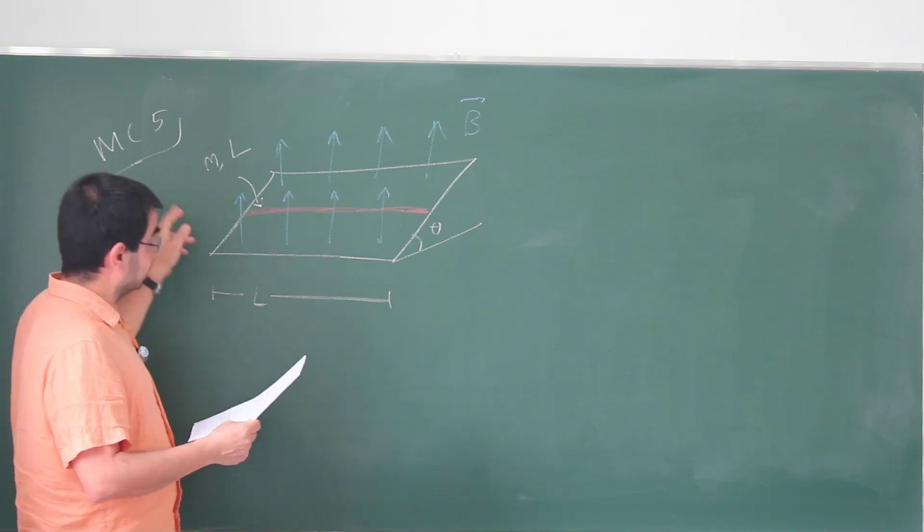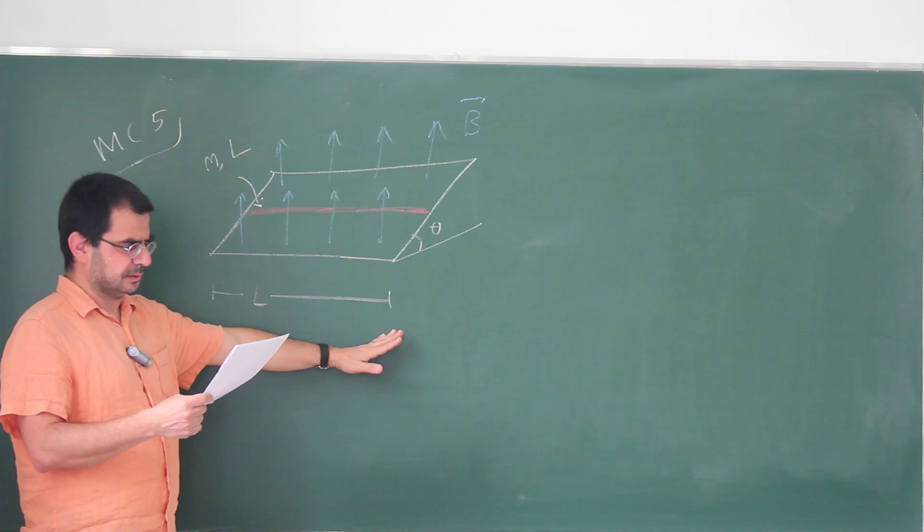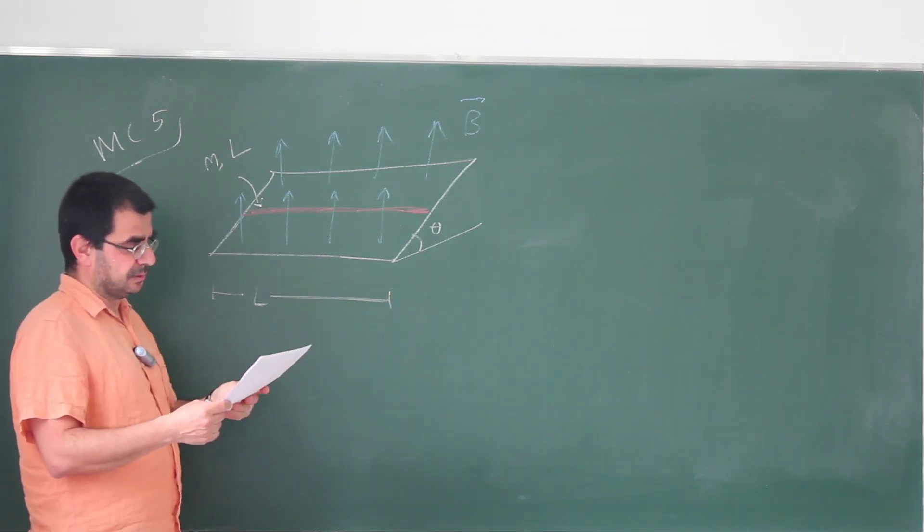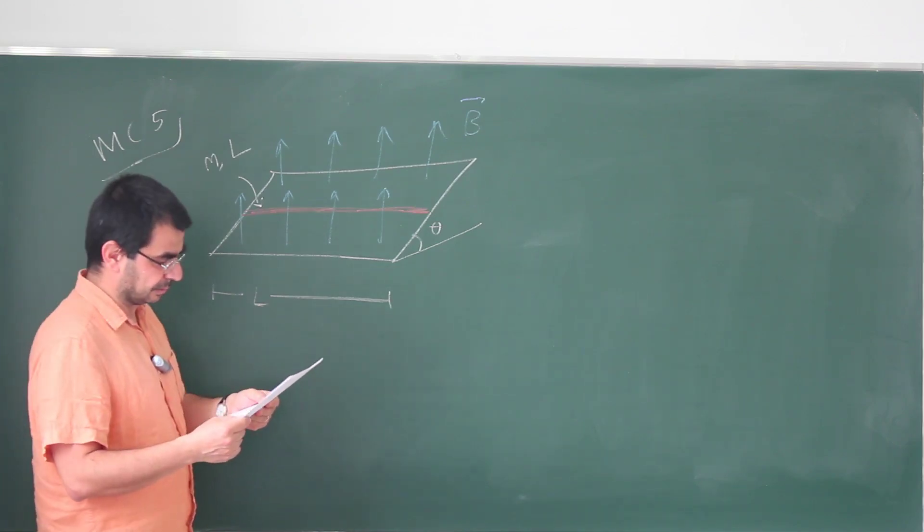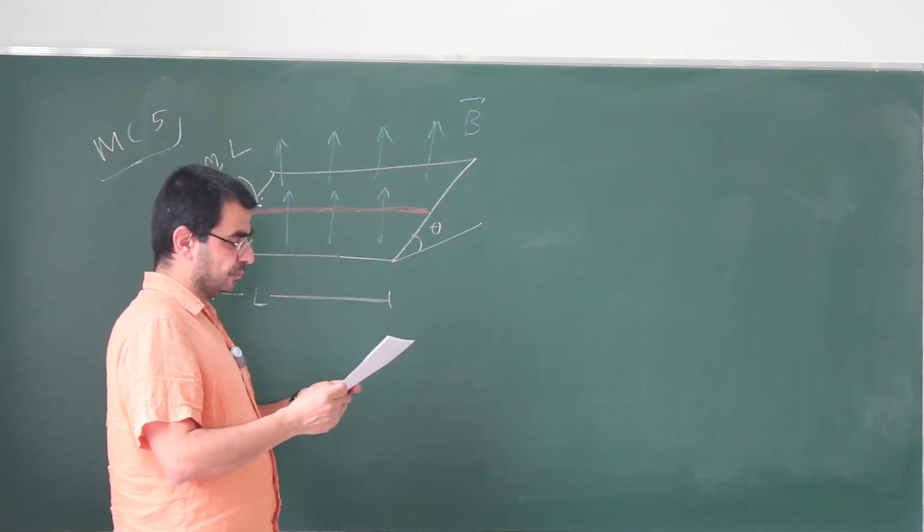Suppose a connecting wire with mass M and length L, so this is the distance L, is placed on a frictionless incline tilted at an angle theta from the horizontal as shown in the figure. There's a uniform vertical magnetic field B at all points. In order to prevent the wire from sliding down the incline, a voltage source is attached to the current flow through it. The voltage source does not exert any force on the end of the wire.